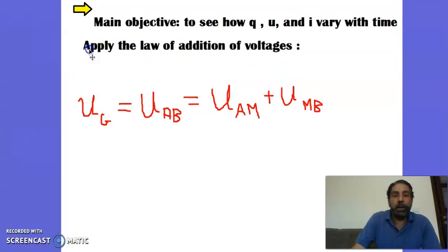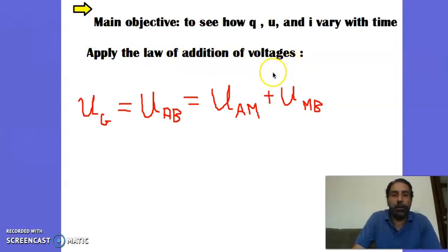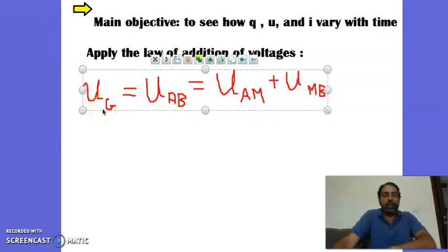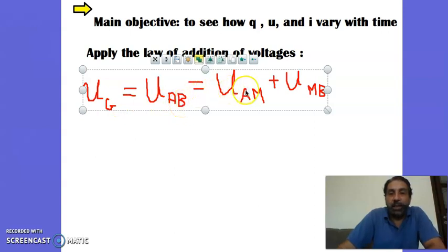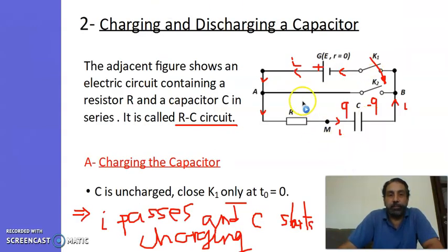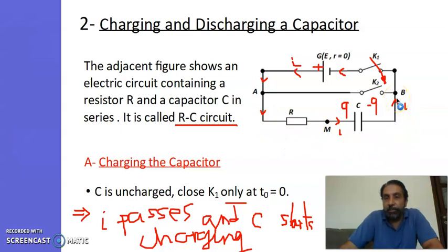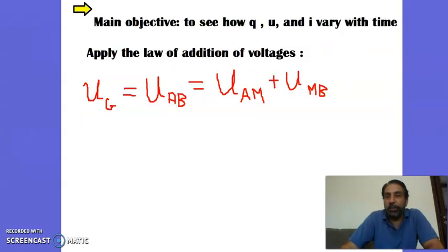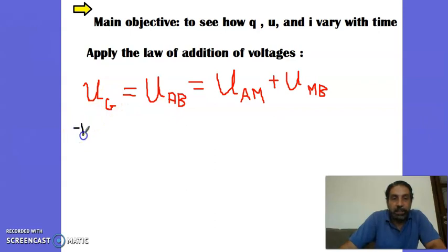First, apply the law of addition of voltages. This means: U_generator = U_AB = U_AM + U_MB. U_generator equals U_AB because there is a connecting wire. U_AB equals U_AM plus U_MB. U_generator — you remember from first secondary — equals E minus r·i, where r is the internal resistance.